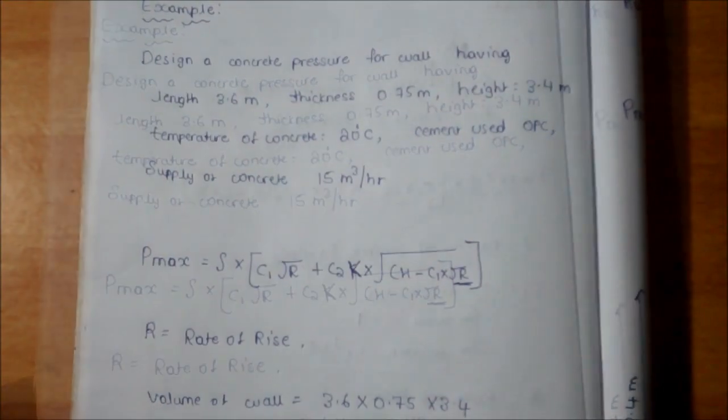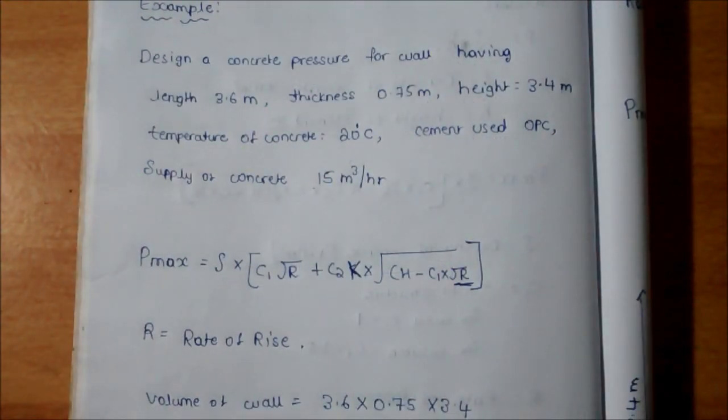For example, design a concrete pressure for a wall having length 3.6, thickness 0.75, height 3.4 meters, temperature of concrete 20 degrees Celsius, and cement used is OPC. The supply of concrete is 15 meter cube per hour. It depends on which type of method you are using for pumping: whether you are using pumping or boom placer or hand by bucket.